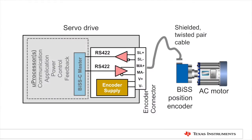For a servo motor drive, typically an encoder is used to know about the absolute position of the motor. This encoder can be connected over a BiSS digital interface standard to the motor controller. The BiSS master hardware interface has been implemented in the TIDA00175, supporting both point-to-point and bus structure.